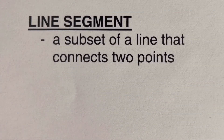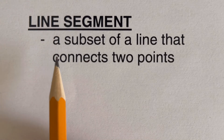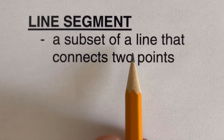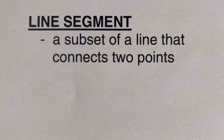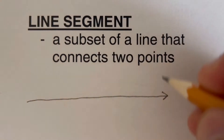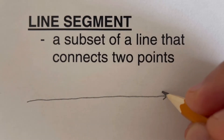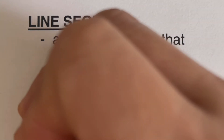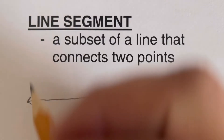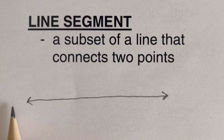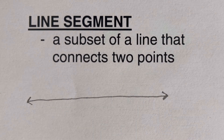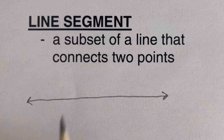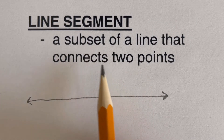By definition, a line segment is a subset of a line that connects two points. So if we are given a line right here, we remember that a line does not end on both directions — it goes infinitely on both sides. So if we say line segment, it is a subset of a line that connects two points.